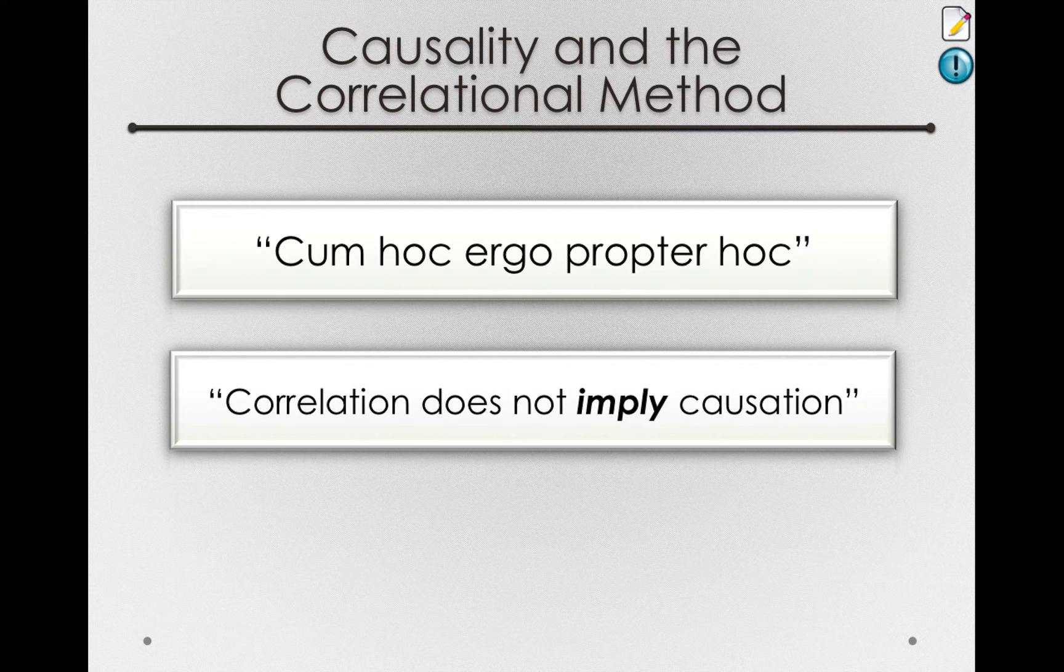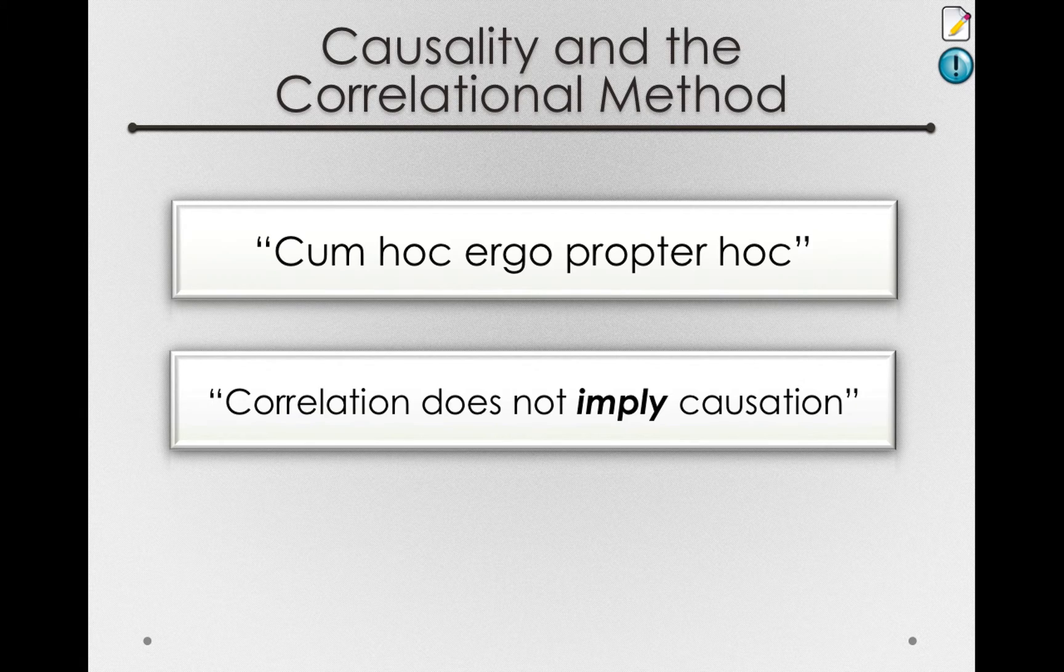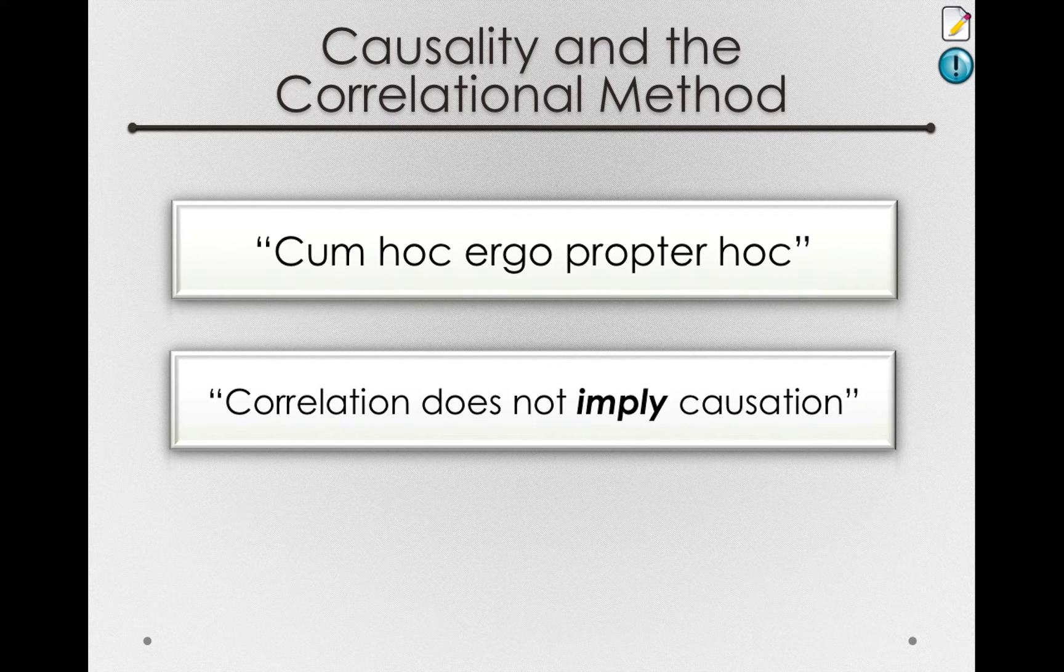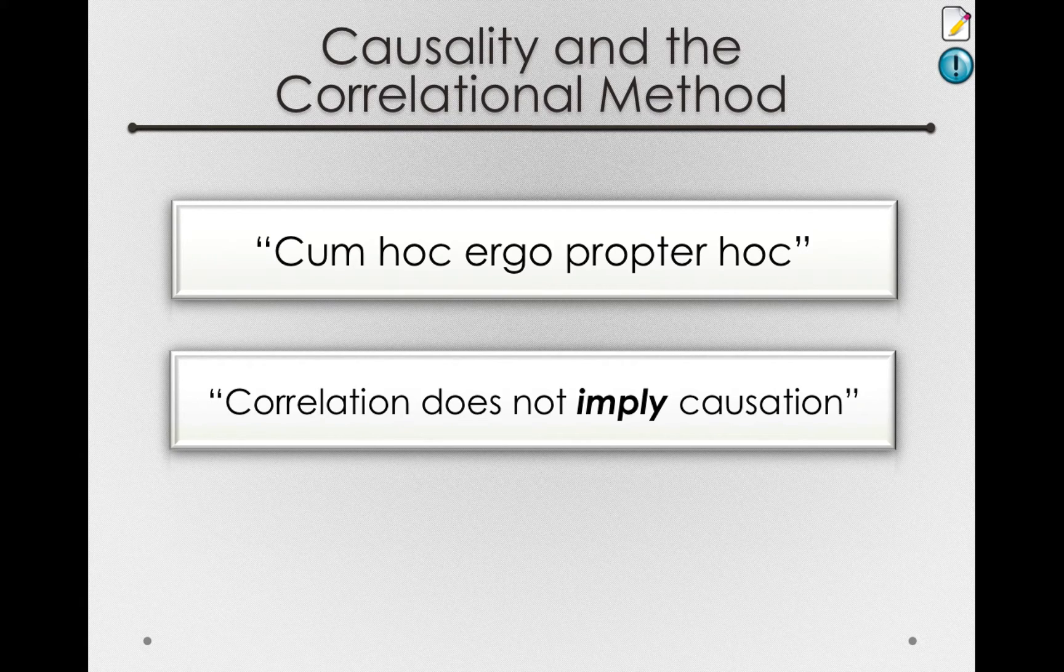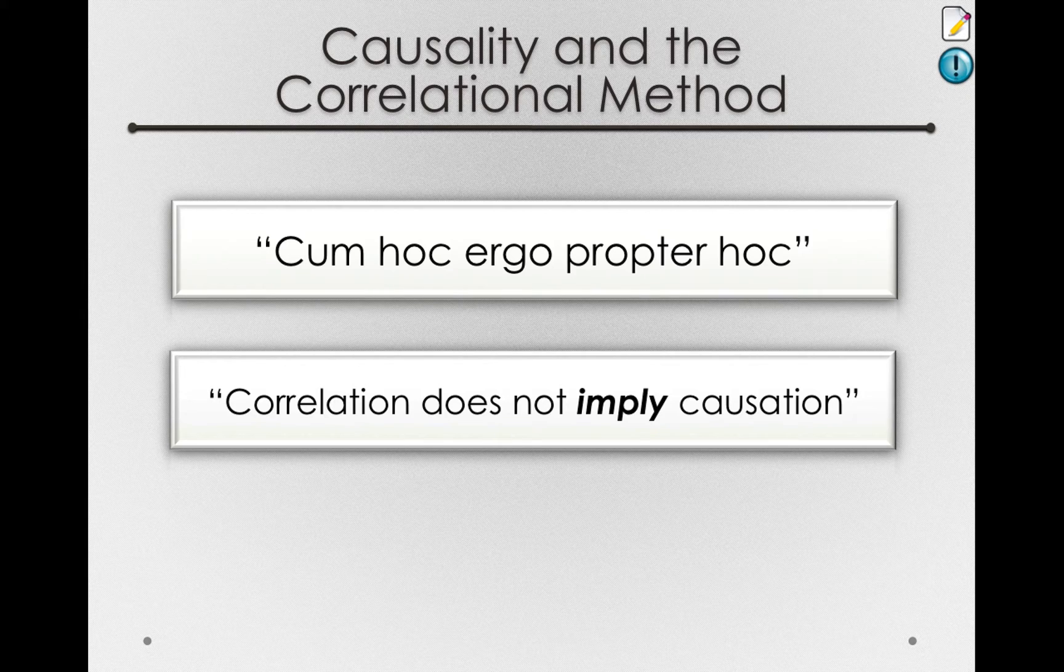Imply is used very specifically here. This means correlation does not necessarily entail causation between two things. We've already seen with ice cream that just because two things are correlated doesn't mean one is causing the other. It could be that some third variable is responsible for the changes in each.